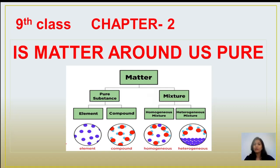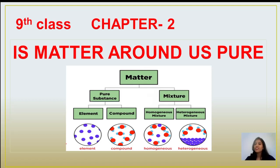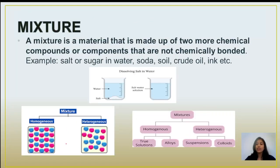Hey everyone, I welcome you all to my channel, Science Side. My name is Charu. Today we will discuss Chapter 2 of the 9th class science: 'Is Matter Around Us Pure or Not?' Matter is anything that occupies space and has mass — solid, liquid, gas — all materials are included in matter. Matter is divided into two categories: pure substances (elements and compounds) and mixtures (homogeneous and heterogeneous).